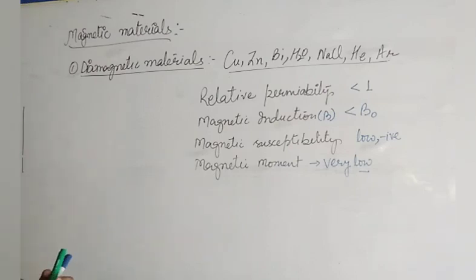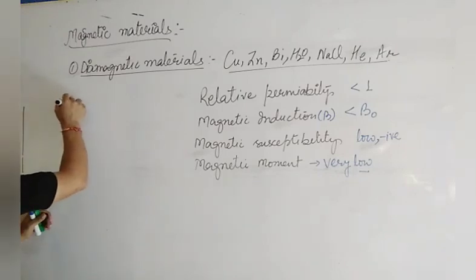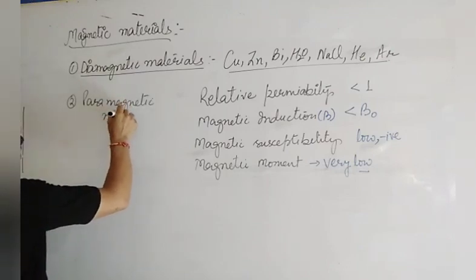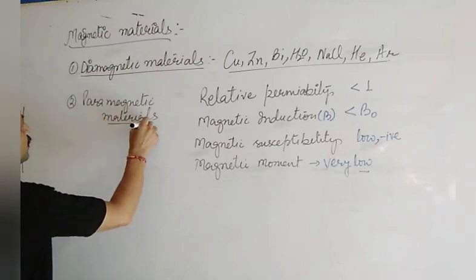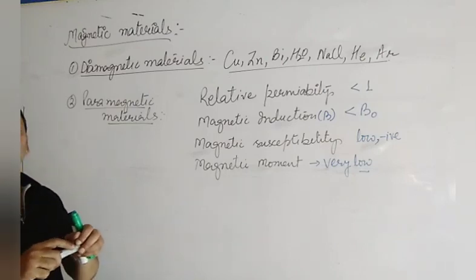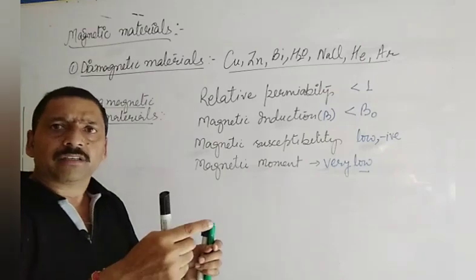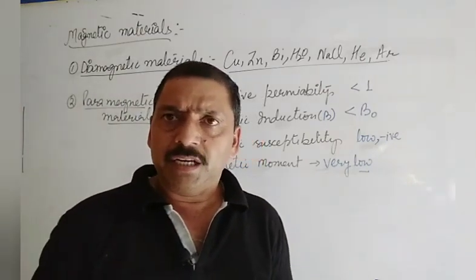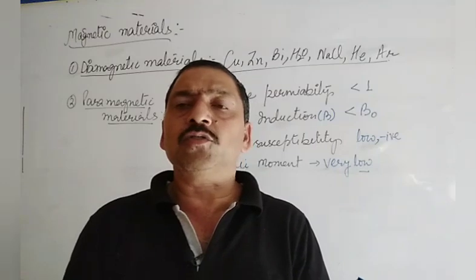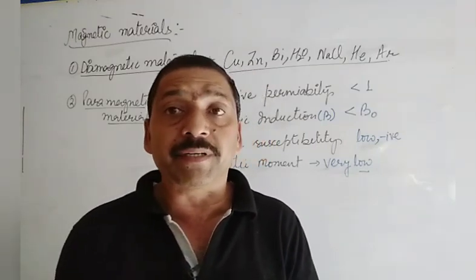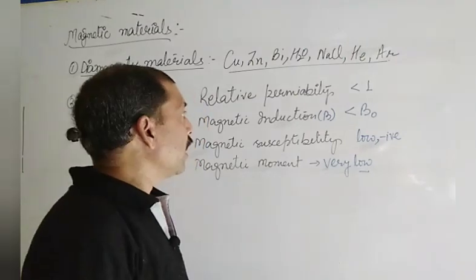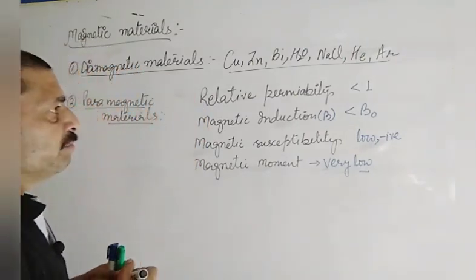Number two are paramagnetic materials. Paramagnetic materials are those which are feebly magnetized in the direction of the magnetic field. If placed in a magnetic field, they align themselves in the direction of the magnetic field, but feebly. Those materials are called paramagnetic materials.